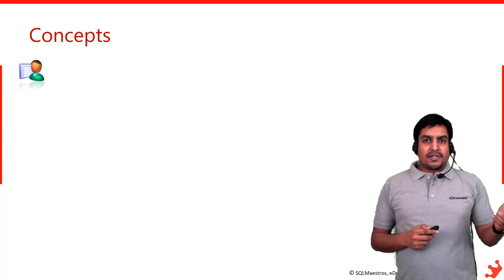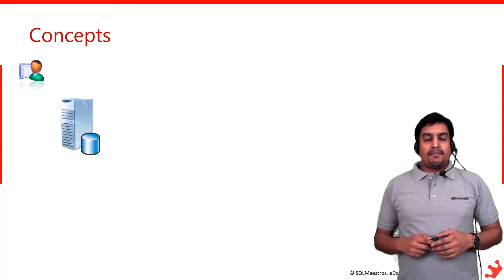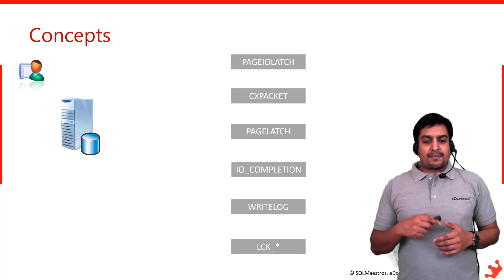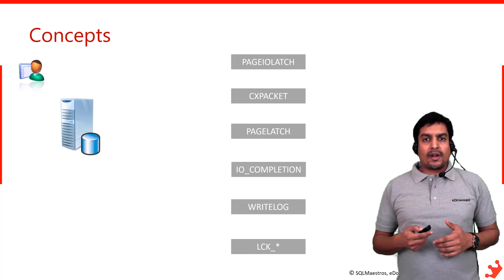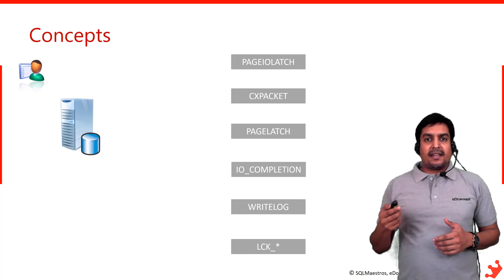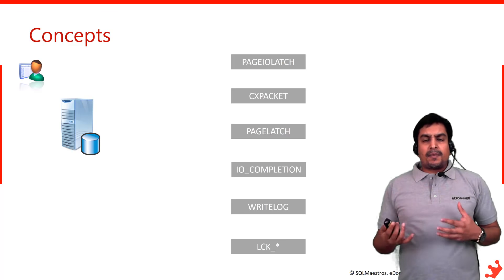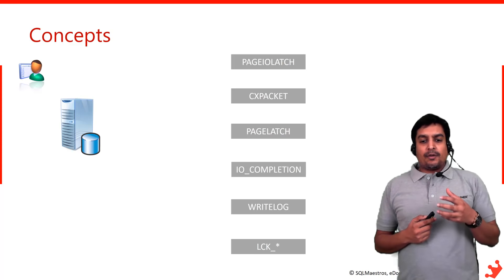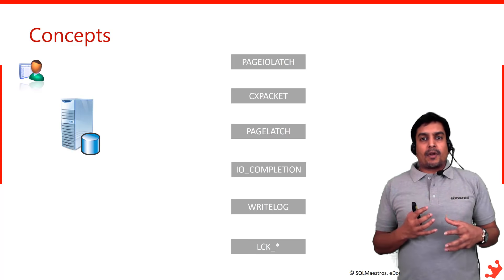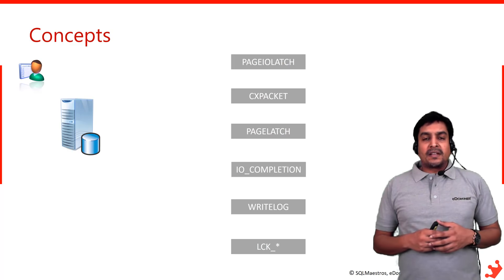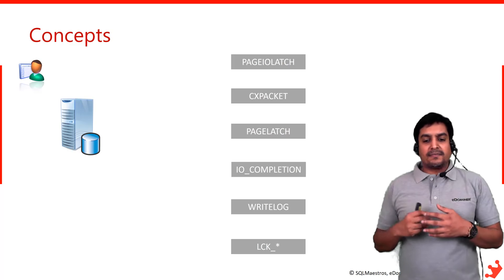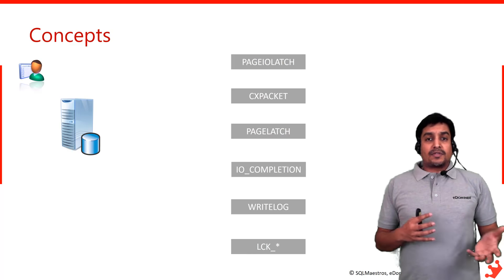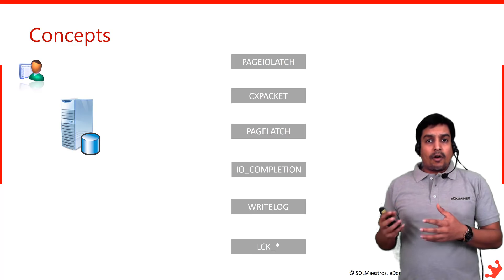Let me try to explain this with an illustration. For example, you have your customer, a user, you have your SQL Server setup, and here are all the different wait types. Now look at page IO latch, CX packet, page latch, IO completion, write log, and there are many different wait types with LCK underscore star. These are common wait types that we come across quite often and each one has a different meaning. Page IO latch could denote a bottleneck at the IO level — physical IO. CX packet has to do with parallelism. Page latch has to do with buffer latch contention. Likewise, write log probably has to do with contention in your log file.